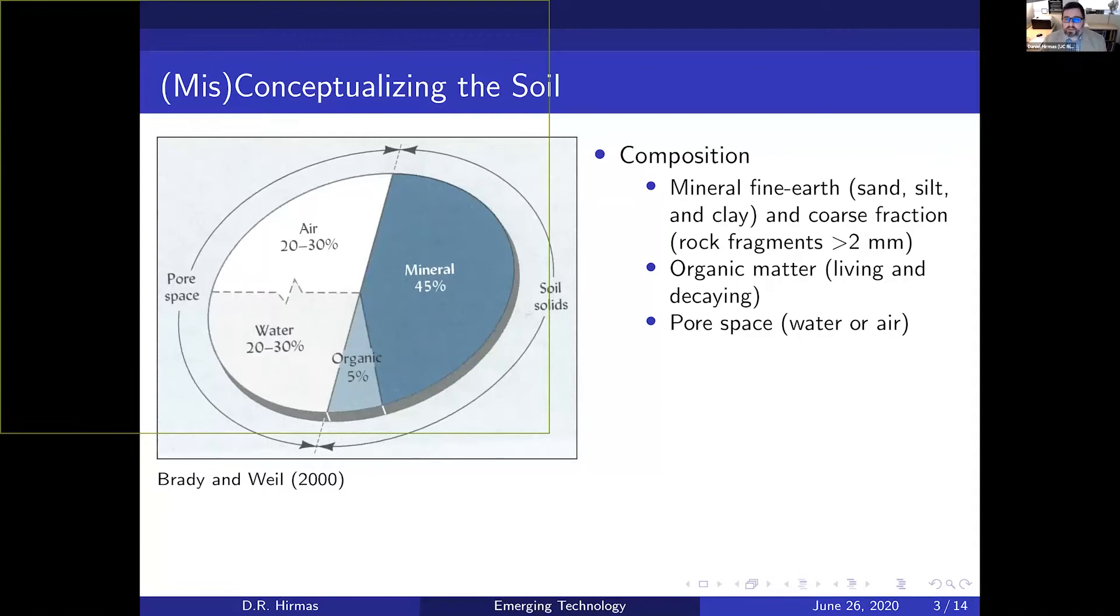One way that we conceptualize the soil is to think of what it's composed of. If you take a cube of soil, about half of that volume is composed of solid material and the other half is pore space. That solid phase is divided into mineral matter, which is the majority, and organic matter. The mineral matter is divided into fine earth and coarse fractions—sand, silt, clay, rock fragments.